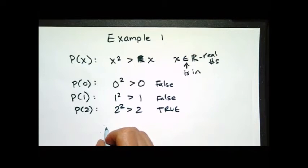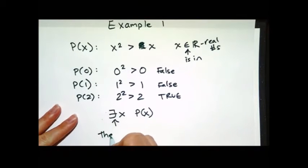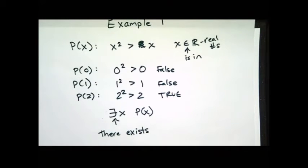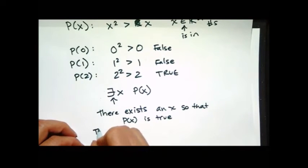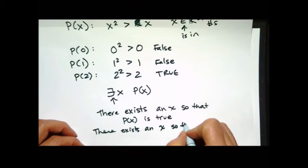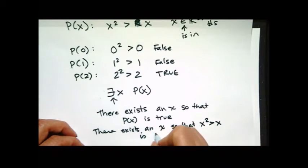So I actually have two different ways to write that. So this letter right here means there exists. So the way I read this is there exists an X so that P of X is true. And I can plug in so I can say there exists an X so that X squared greater than X is true.